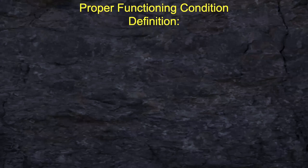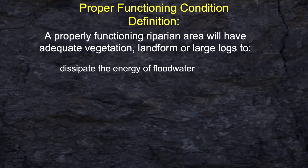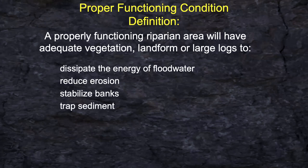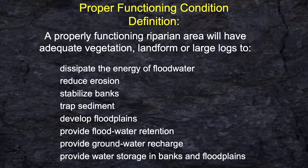The definition of a properly functioning riparian area is one that has adequate vegetation and land form — such as large rocks, boulders, or large buried logs — to dissipate the energy of flood waters and slow it down. When you slow the flood waters down, you can reduce erosion. We're not trying to eliminate it; erosion is natural. We can stabilize the banks with vegetation or land form, trap the sediment in the water, and the sediment helps enlarge the floodplain, giving more water storage capacity and groundwater recharge into aquifers.